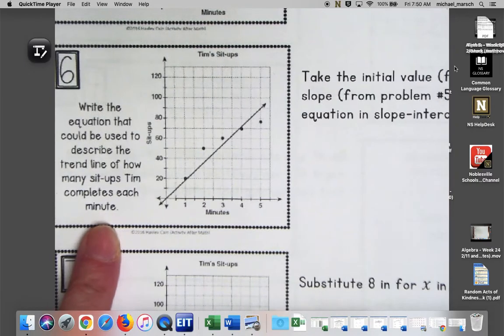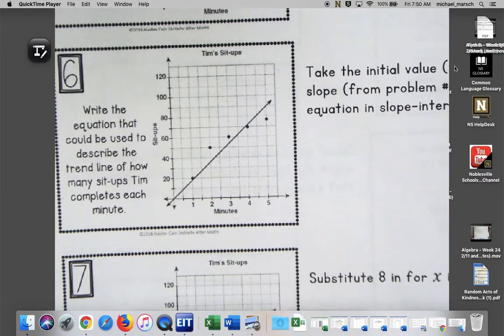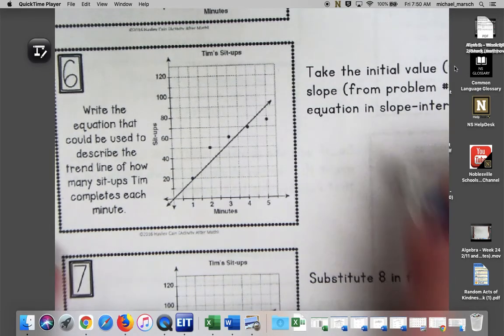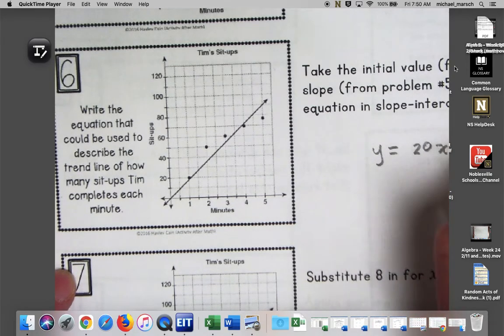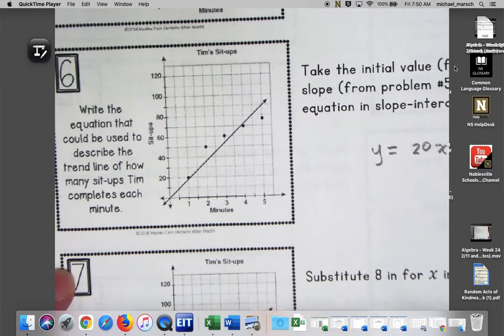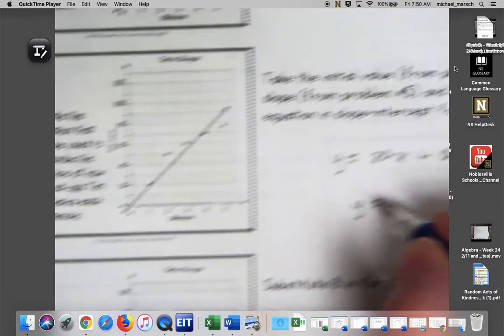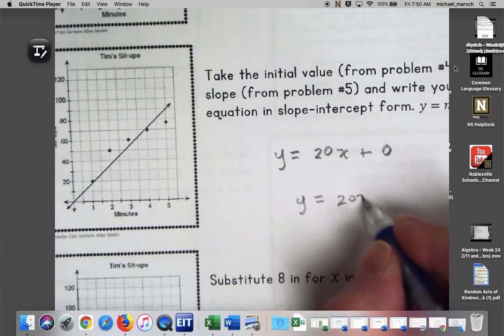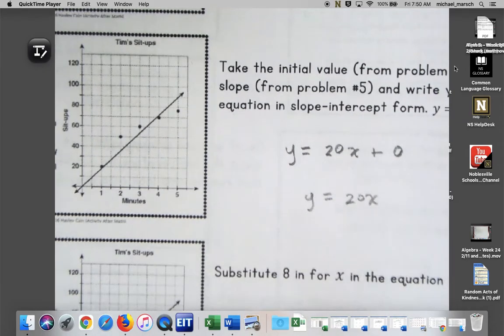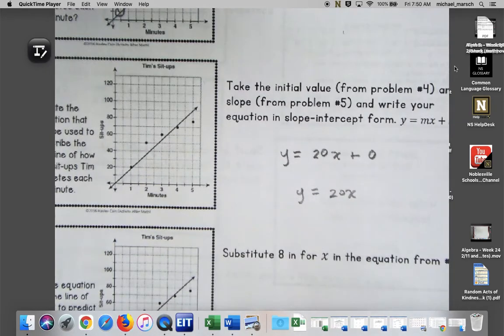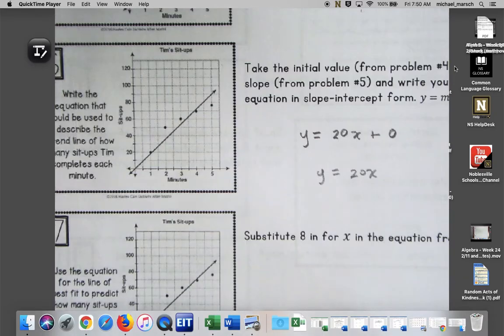Write the equation that could be used to describe the trend line. I'm on number six now. I told you to use the initial value, that's our y-intercept from problem four, and the slope from problem five. Hopefully you had y equals 20x plus zero, which we all know we don't have to write the plus zero. So y equals 20x.